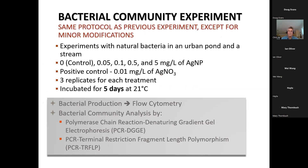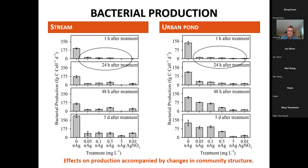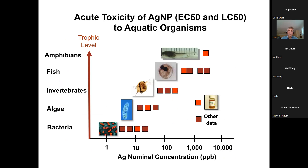A further study on bacterial communities used flow cytometry and PCR to examine bacterial production and community structure. One hour after treatment, bacterial production from a stream and an urban pond was knocked down, with some recovery at lower nanosilver concentrations after five days. There were also effects on bacterial community structure as a result of those exposures.